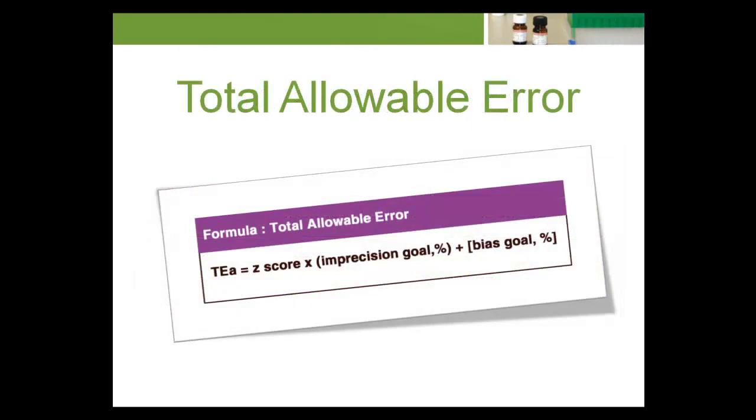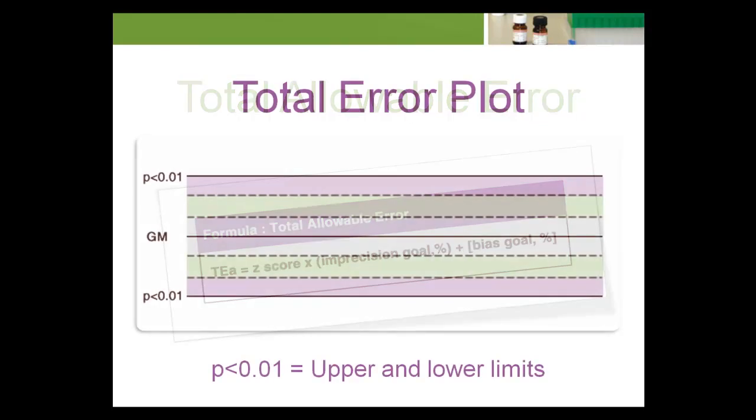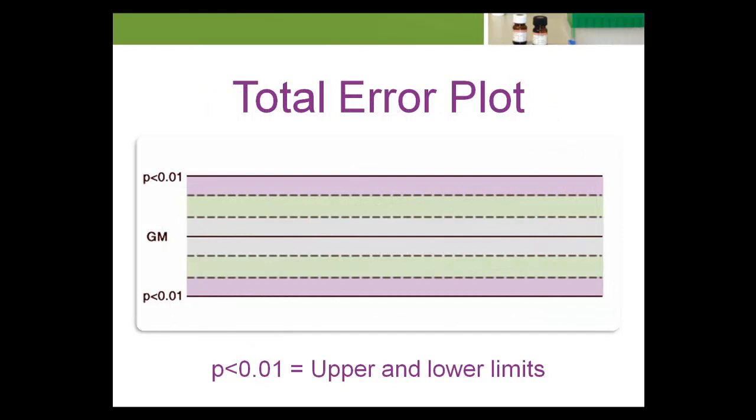Since the amount of TEA is calculated using a z-score, which is associated with some probability of outliers, these limits establish a threshold for QC outliers. In this example, the probability a value will be outside the limits is 1% or less. This can also be expressed, as seen on the plot, as p less than 0.01.